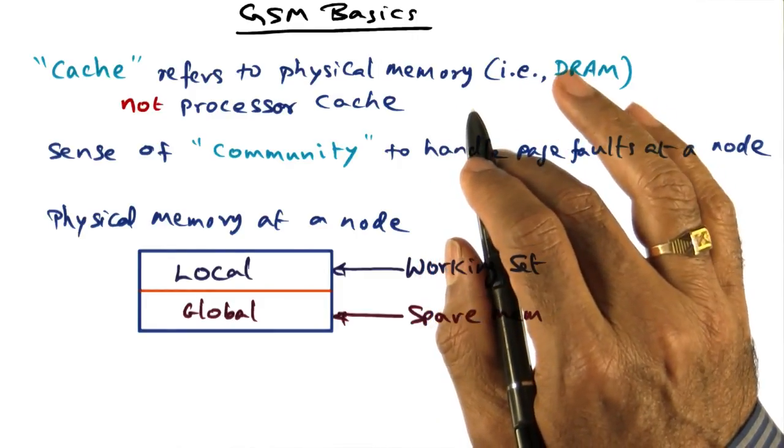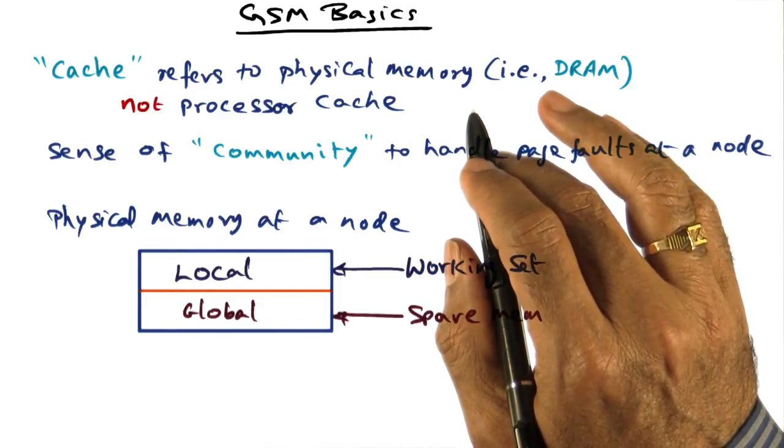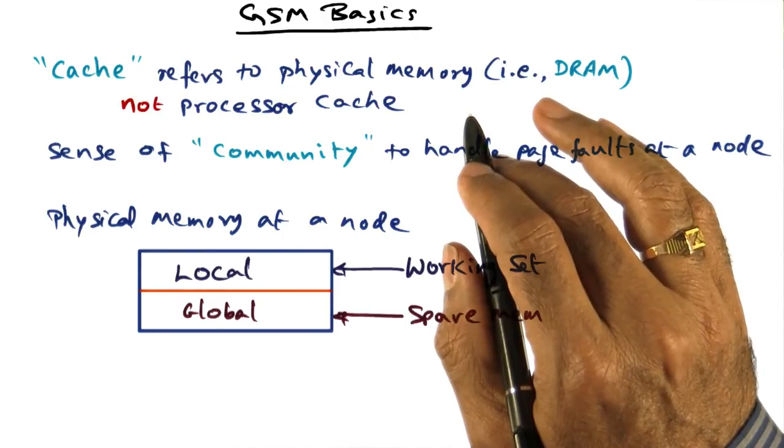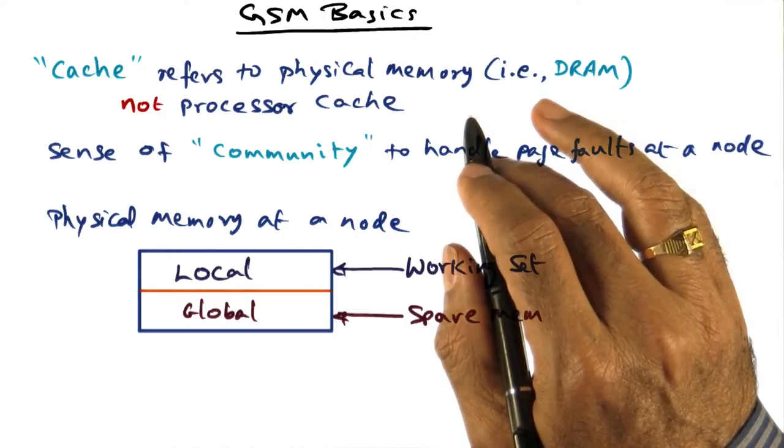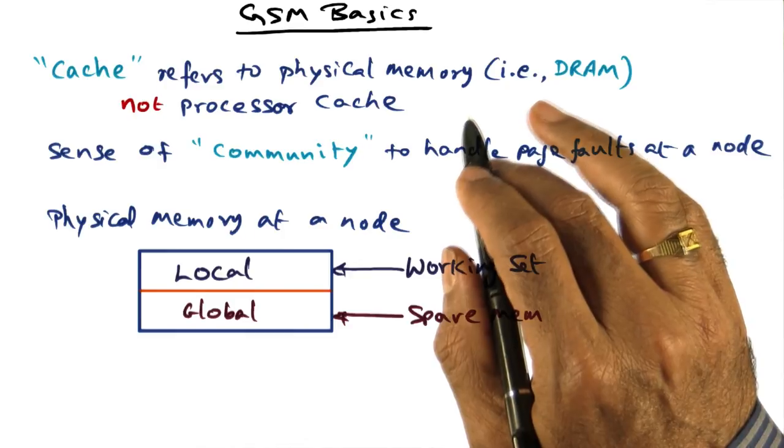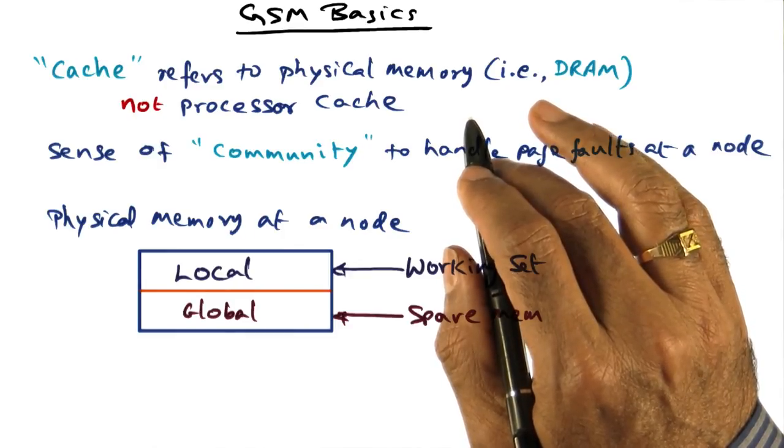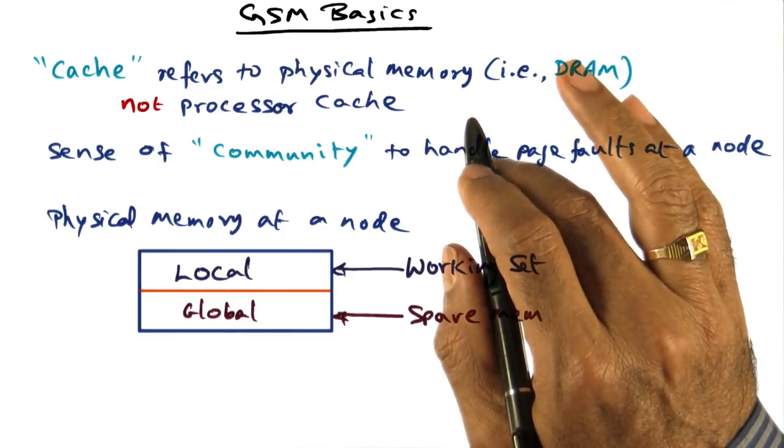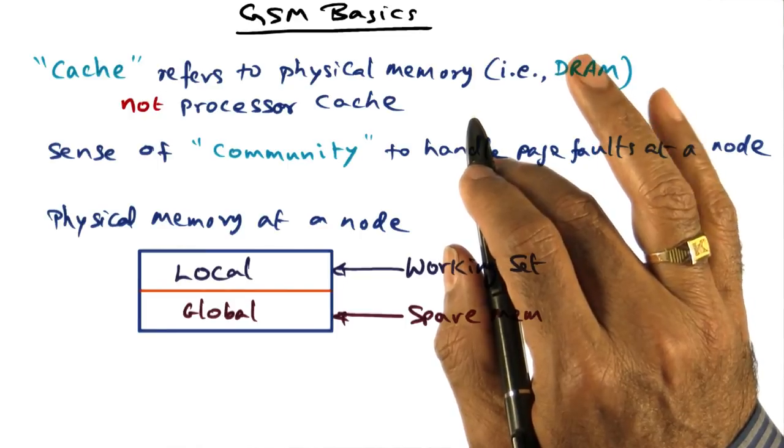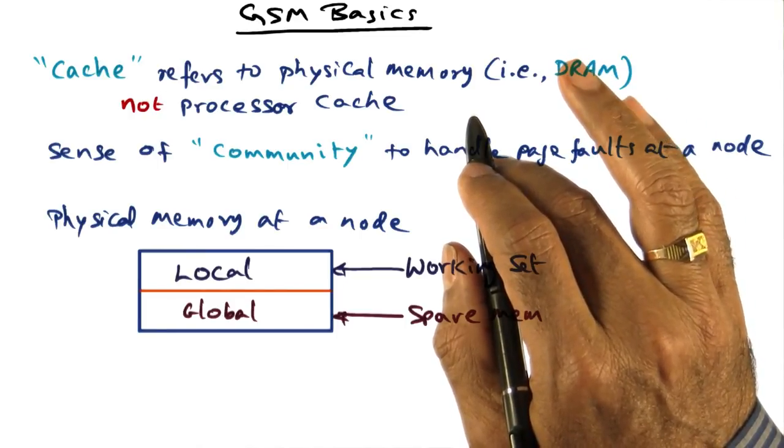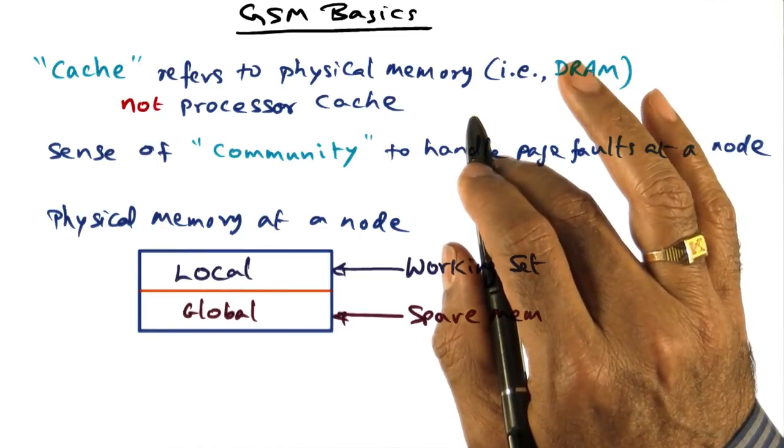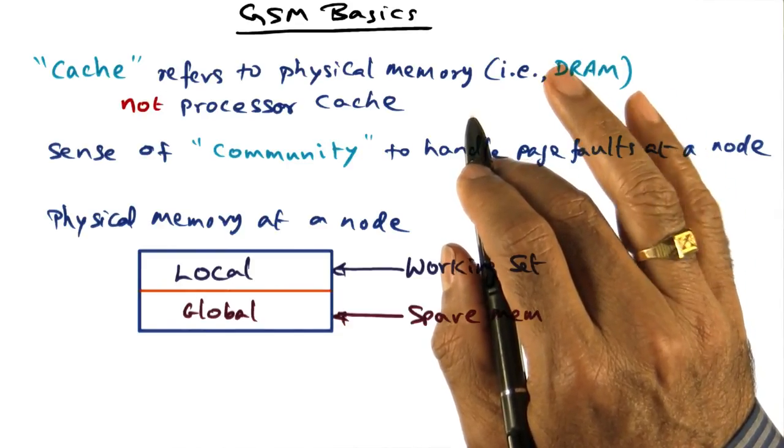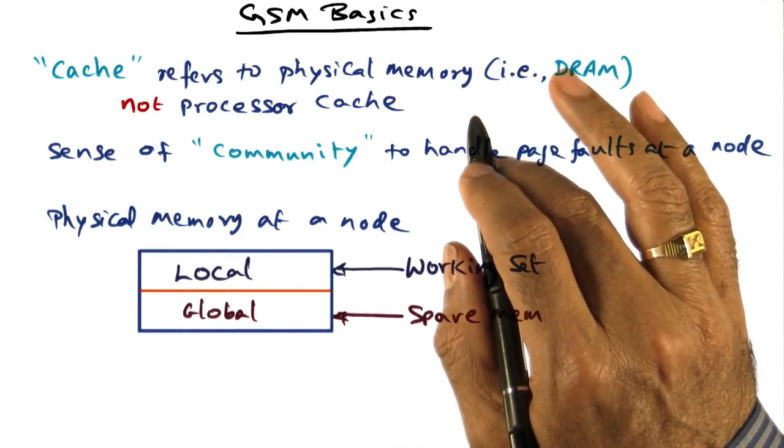In any virtual memory management system, when you have to throw out a page from physical memory, you use an algorithm, a page replacement algorithm. And the page replacement algorithm that is typically employed in computer systems is some variant of an LRU, or least recently used algorithm. GSM also does exactly the same thing, except it integrates cluster memory management at the lowest level across the entire cluster.